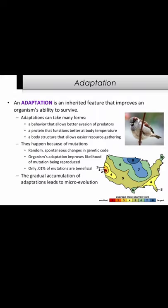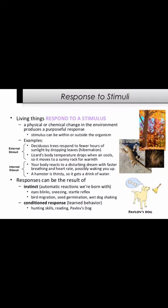Adaptation: an adaptation is an inherited feature that improves an organism's ability to survive. Adaptations can take many forms — a behavior that allows better evasion of predators, a protein that functions better at body temperature, or a body structure that allows easier resource gathering. They happen because of mutations — random, spontaneous changes in genetic code. When mutations are beneficial, the gradual accumulation of adaptations leads to microevolution.